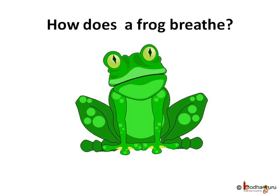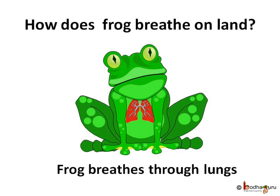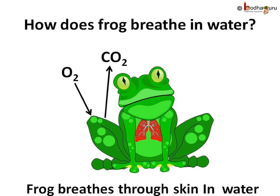We know amphibians, like frog, can live both on land and in water. On land, a frog breathes through nostrils and has a pair of lungs. You must have seen frogs in the ponds too. How does it breathe in water? Well, it uses oxygen which is dissolved in water. The frog takes in oxygen dissolved in water using its moist skin and gives out carbon dioxide.